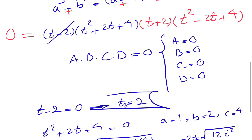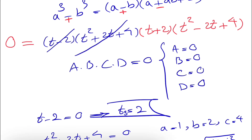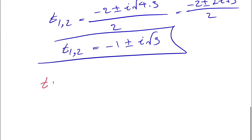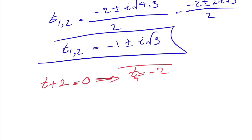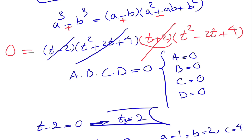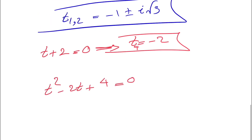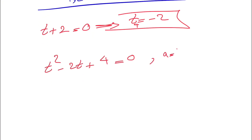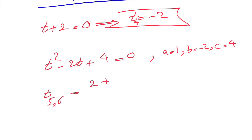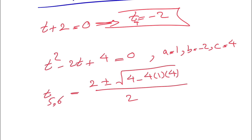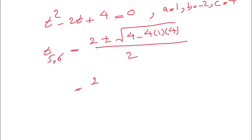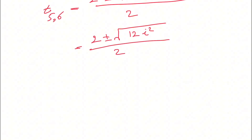Moving on to the remaining factors. t plus 2 equals 0 gives t equals minus 2 — that's our fourth answer, which we also could have guessed at the beginning. Then we have the last factor: t squared minus 2t plus 4 equals 0. Applying the quadratic formula again: a equals 1, b equals minus 2, c equals 4. This will give us our fifth and sixth answers.